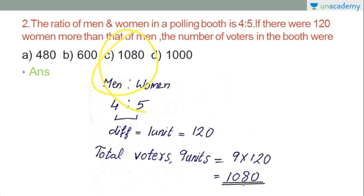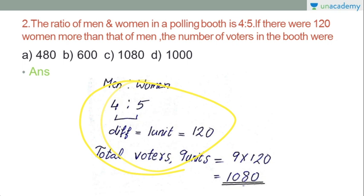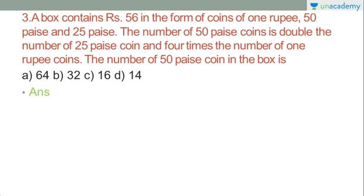Then one more question. The 4 to 5 ratio gives a difference of 1 unit. 1 unit is 120 and 9 times 120 gives us the answer 1080. We are moving to the next question. A box contains rupees 56 in the form of coins of 1 rupee, 50 paise and 25 paise.